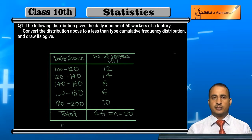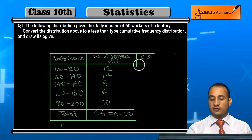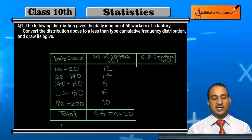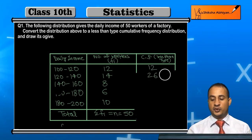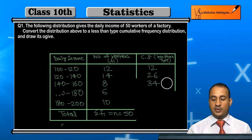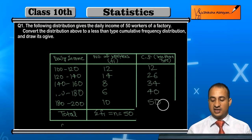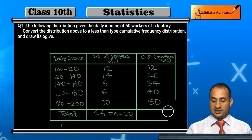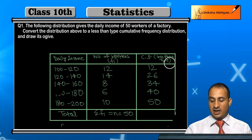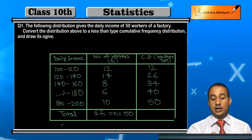Now I am going to write the cumulative frequency — less than type. So: 12, then 12 plus 14 equals 26, then 26 plus 8 equals 34, then 34 plus 6 equals 40, then 40 plus 10 equals 50. This is the less than type cumulative frequency.